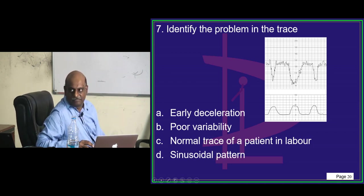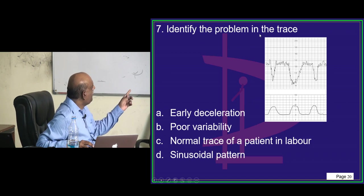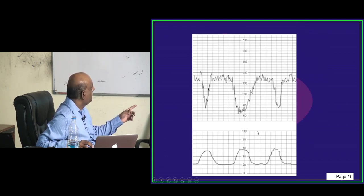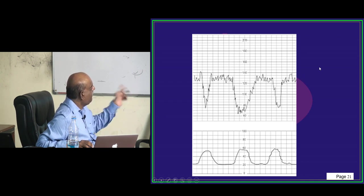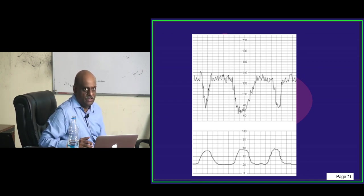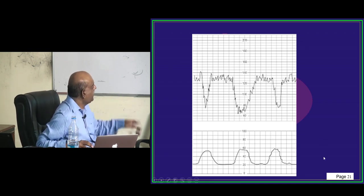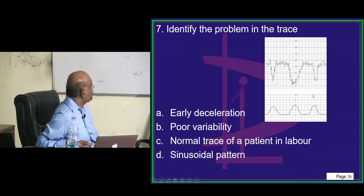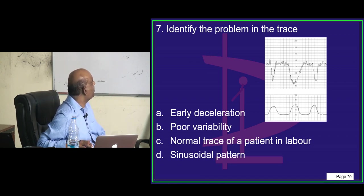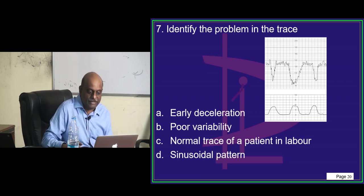This is the tocogram — identify the problem in the trace. One channel is the fetal heart rate and the other is myometrial force. Do you call this early deceleration, poor variability, normal trace, or a sinusoidal pattern? Identify the problem in the trace.